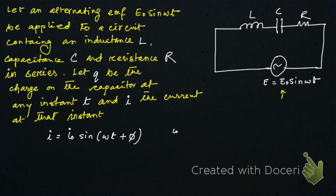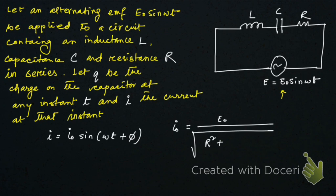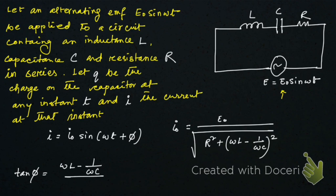Here i₀ is the maximum current, given by i₀ = E₀ / √(R² + (ωL − 1/ωC)²). And tan φ, this phase angle, is given by tan φ = (ωL − 1/ωC) / R.